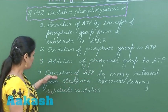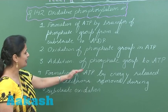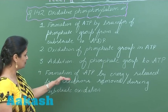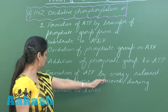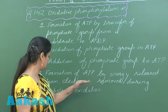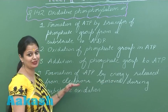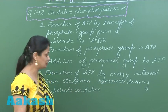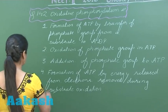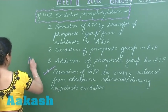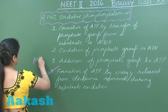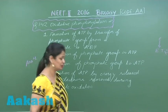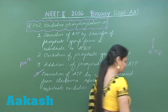The fourth option — formation of ATP by energy released from the electron removed during substrate oxidation — is the correct answer. So the right option for this question is option number four. Let's move on to question number 143.